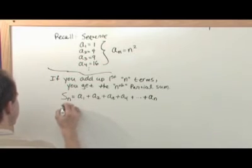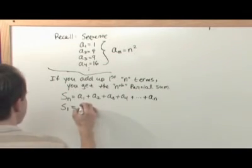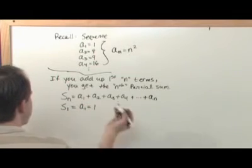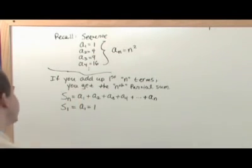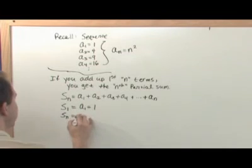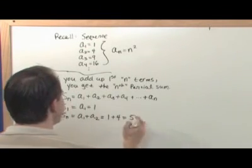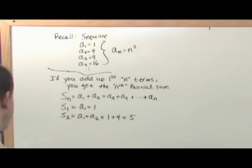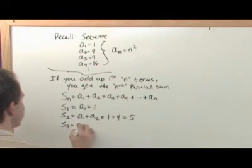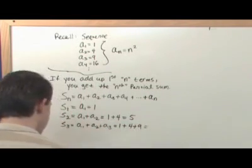So the first partial sum S₁ is just going to be equal to A₁, which is equal to 1 — you're not really adding it up to anything, it's just the first number in the sequence. The second partial sum would be A₁ plus A₂, which would be 1 plus 4 — that's 5, so S₂ equals 5. And the third partial sum likewise is going to be A₁ plus A₂ plus A₃, which is 1 plus 4 plus 9, and if you add all that up you get 14.